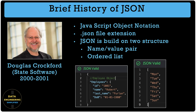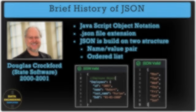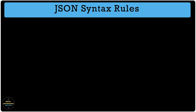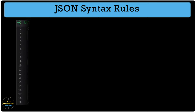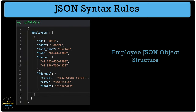In the data engineering world, we deal more with key-value or name-value pair JSON files than ordered lists. JSON syntax is derived from JavaScript Object Notation syntax. JSON data is written as a key-value pair, also referred to as a name-value pair. A name-value pair consists of a field name in double quotes, followed by a colon character, followed by a value.